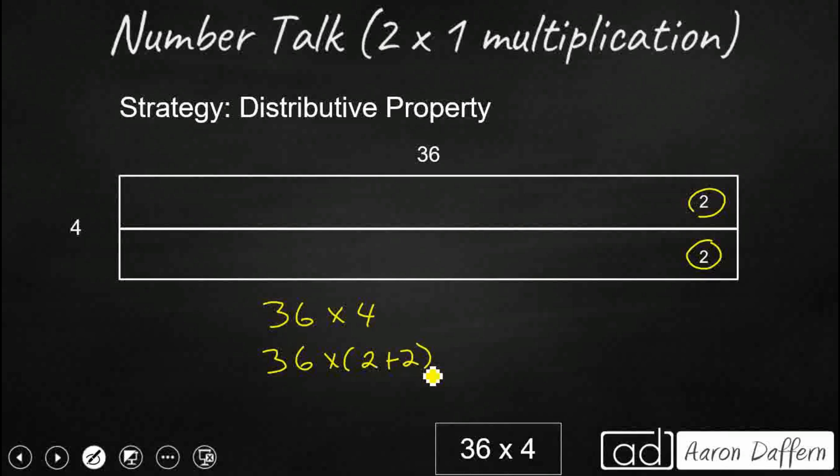And so the distributive property lets us break apart and distribute that 36 and multiply by each of those 2 addends. So we are going to take our 36 and multiply it by the first 2, and add it to the product of our 36 and our second 2. So 36 times 2, well we are just going to double 36 and get 72. So guess what we are going to get? We are going to get 144. Hopefully that is the number you came up with.